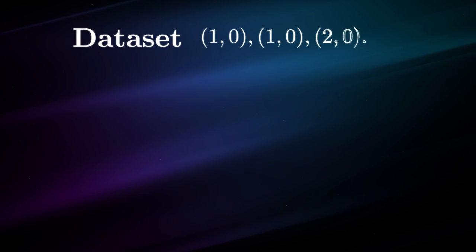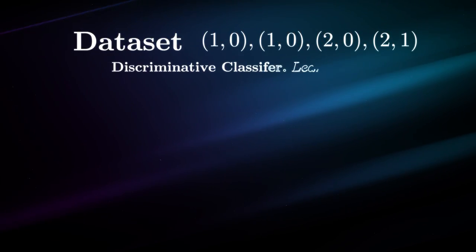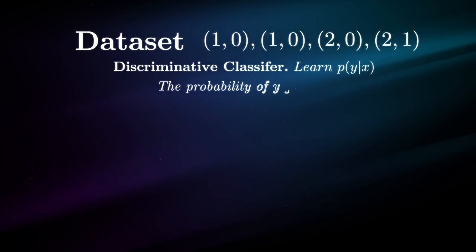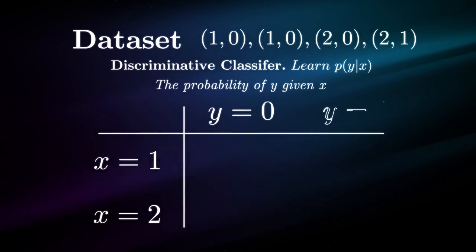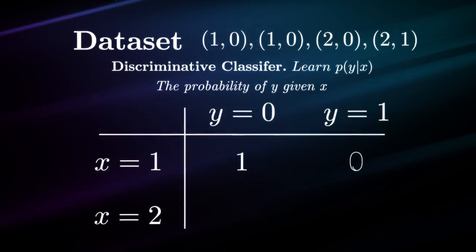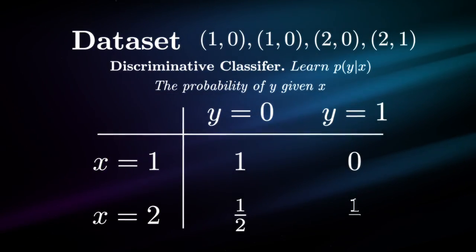To paint a better picture here, let's say we have a labeled data set of integers. X is the input, Y is the output. A discriminative model would want to learn the probability of Y given X. In probability theory, we define this as a conditional relationship, since one variable depends on another.